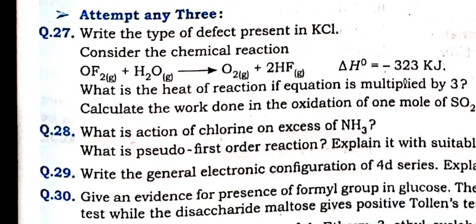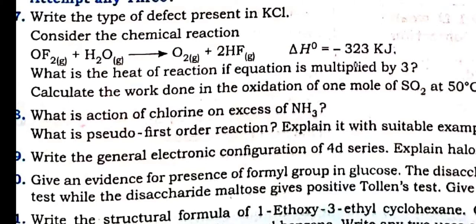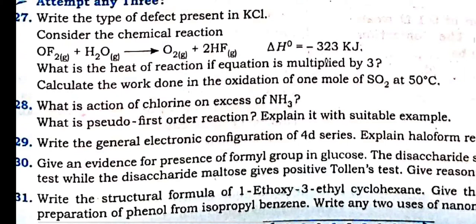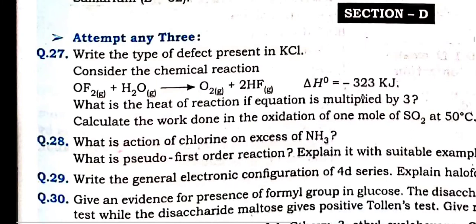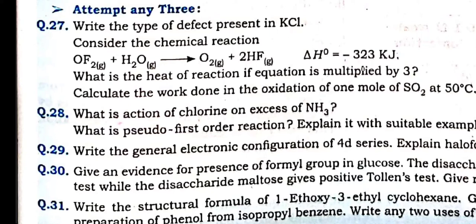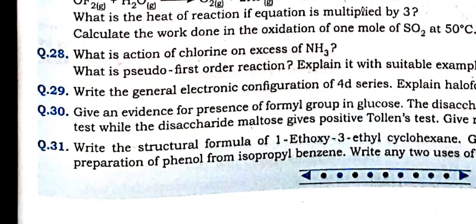Last question — Section D, 4 marks each, 12 marks total. What are the types of defects present in KCl? Consider the chemical reaction: what is the heat of the reaction if the equation is multiplied by 3? Calculate the work done in the oxidation of 1 mole of SO₂. Question 27 is asked from 3 different chapters: first from solid state, second from chemical thermodynamics, and third also from thermodynamics. They can ask from even 3 different chapters.